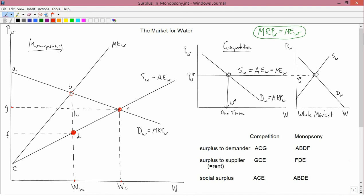Start with competition. On the graph on the left, the competitive point is C.